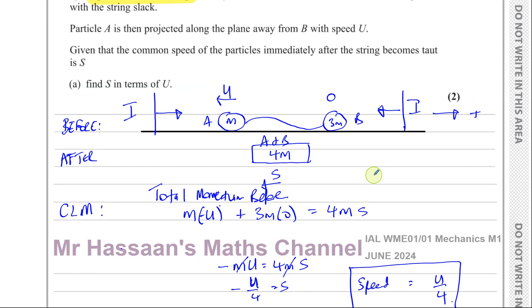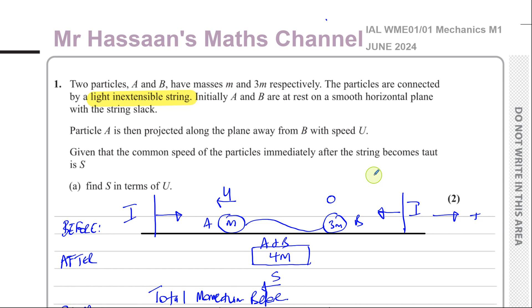So that concludes question number one from the June 2024 mechanics paper, M1 from Edexcel, International A-Levels. If you would like to see other questions from this particular paper, click on the link at the top here. You want to see other questions dealing with momentum and impulse, click on the link over here. You can subscribe to the channel by clicking on the link here, and you can watch the video that will be linked at the top here, which shows you how to use my channel efficiently. Thank you for watching and see you soon.